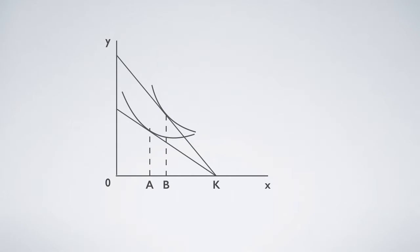When wage rate is high, people enjoy b quantity of leisure, or work k minus b hours.